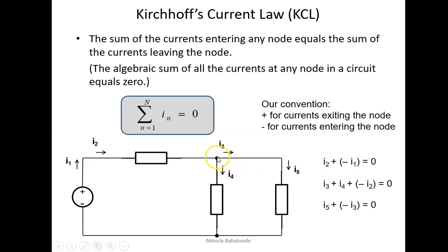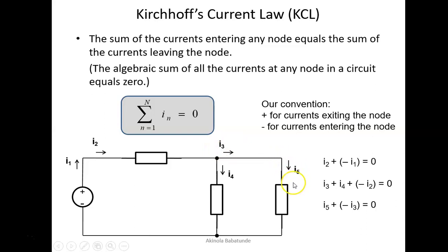If you pick this other node, you will find that i4 is leaving this node, i3 is leaving this node, and the only current entering this node is i2. That is why i3 is positive, i4 is positive, and i2 is negative — giving us i3 plus i4 minus i2 equals zero. There's another node we can pay attention to: i3 is entering, so i3 is negative; i5 is leaving, so i5 is positive. That gives us i5 minus i3 equals zero, because the sum of all currents around any node must equal zero.